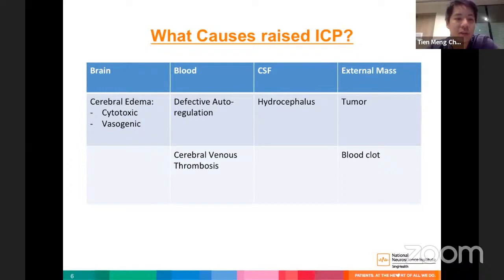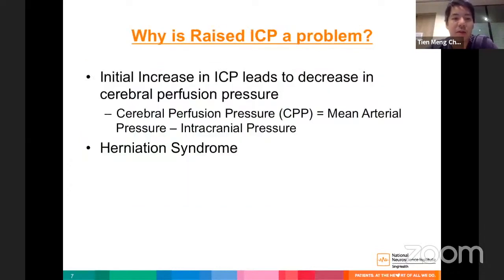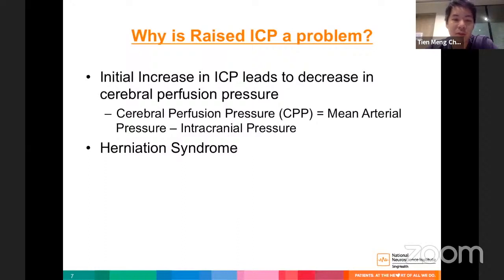Causes of raised ICP include: increased brain volume due to cytotoxic or vasogenic cerebral edema; increased blood from defective autoregulation such as hyperemia after AVM resection, in traumatic brain injury, or in cerebral venous thrombosis where venous outflow is obstructed; increased CSF due to hydrocephalus; and pathological masses such as tumors or blood clots.